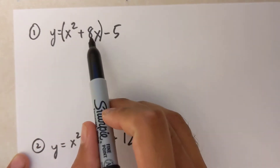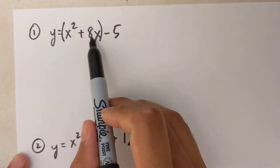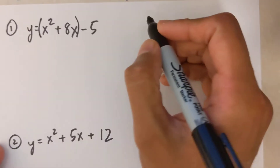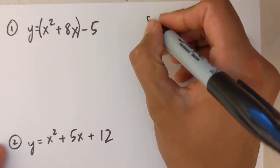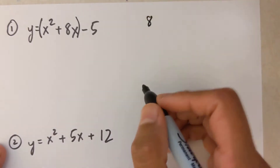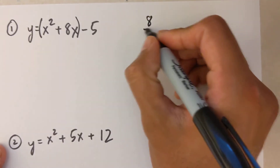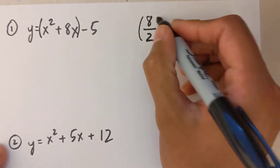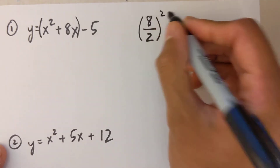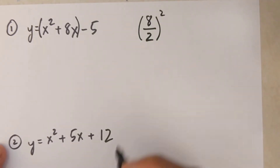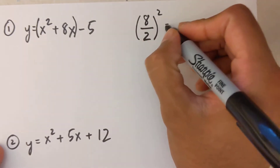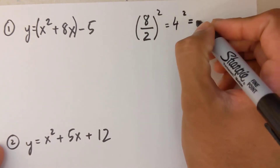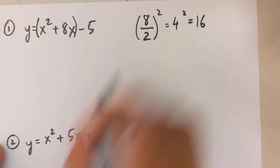The next step is to take this coefficient — 8 — divide it by 2, and then square the result. So that's 4 squared, which is 16.